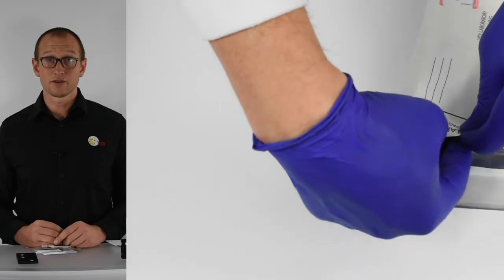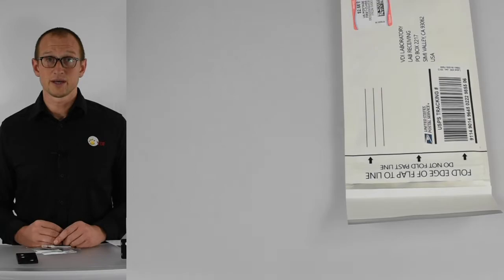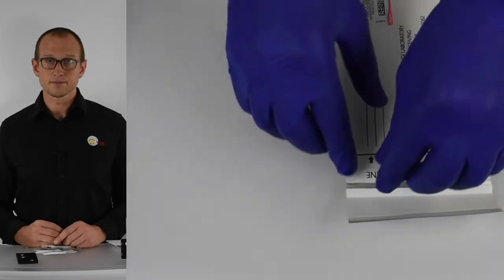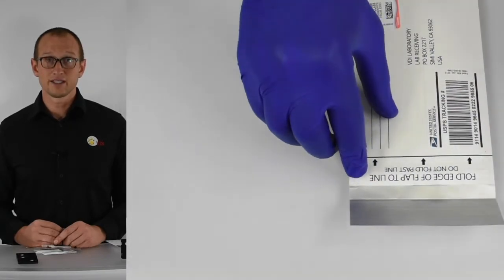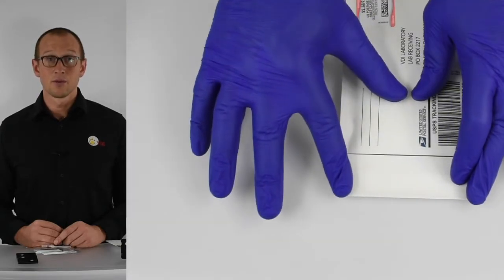Place both the test requisition form and the foil bag into the return envelope. Close the zip seal completely. Remove the self-adhesive cover and fold the flap until the edge reaches the line. Press to seal tightly.